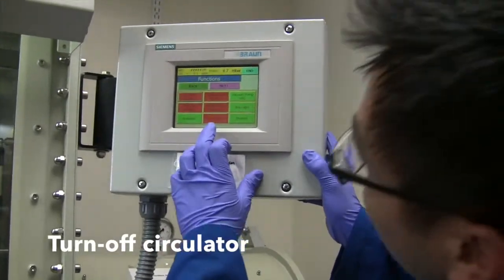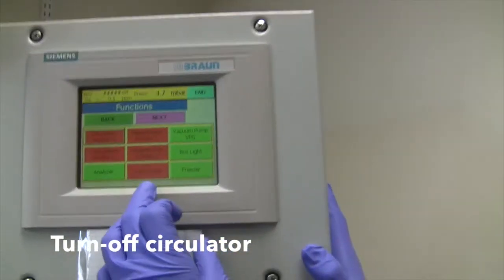Turn off the circulator before using volatile solvents, phosphenes, amines, and thiols.